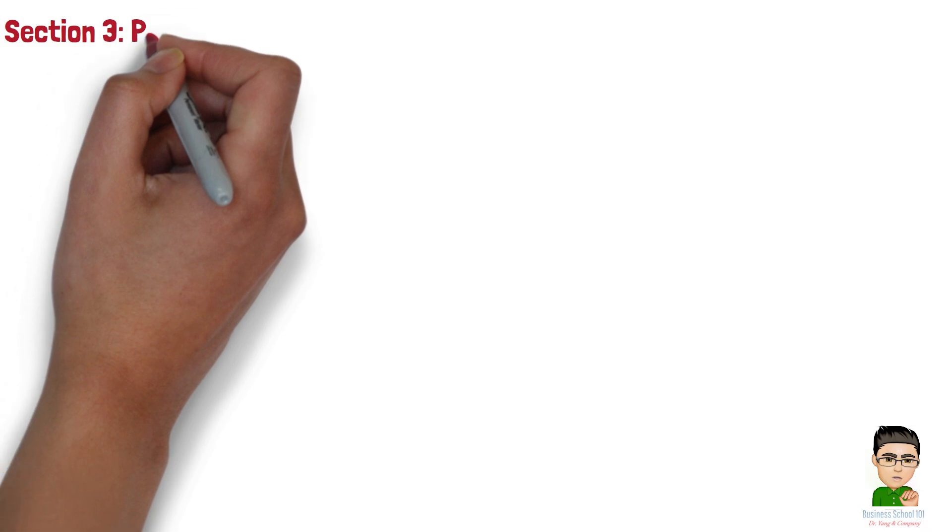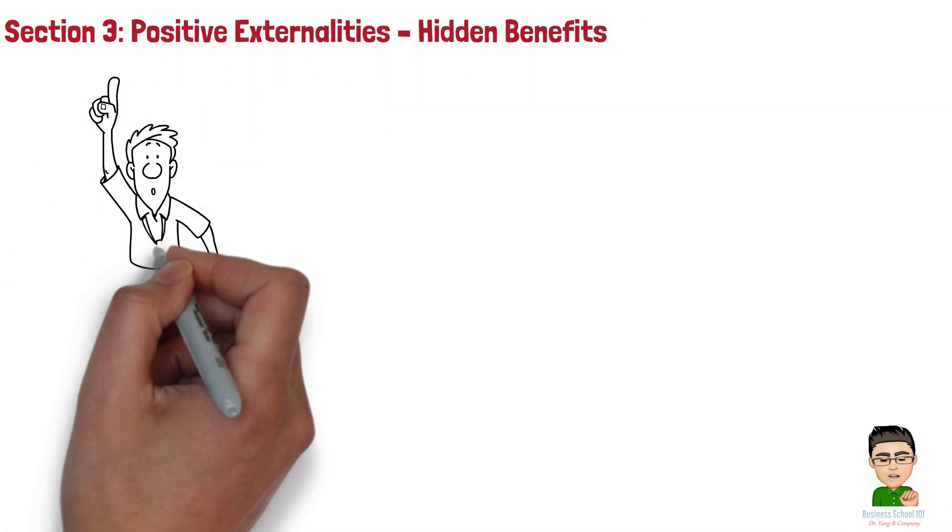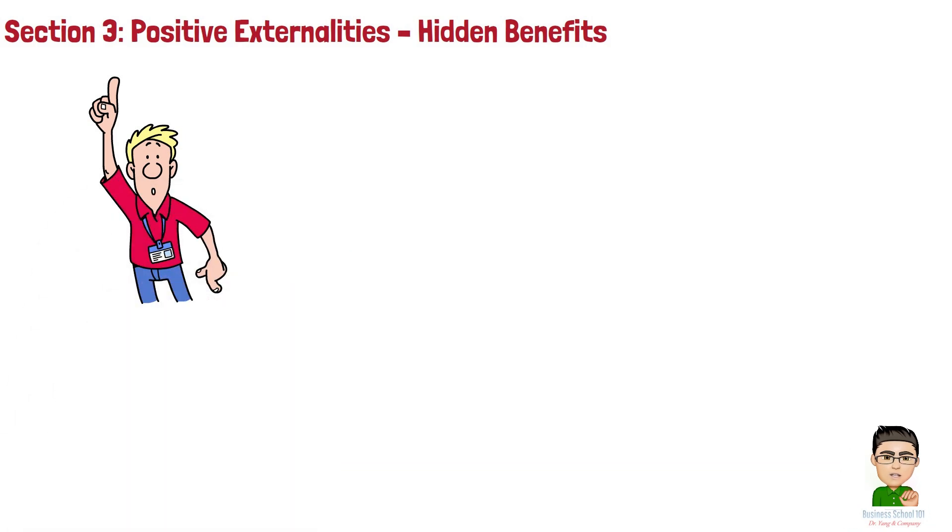Section 3. Positive Externalities – Hidden Benefits. Now, let's look at the flip side, positive externalities, where the benefits extend beyond the individual or business making the decision.